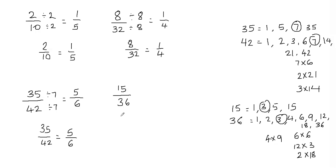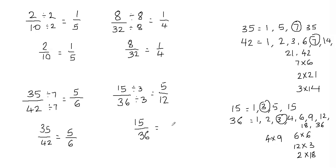So I can divide my fraction 15 over 36 by 3, since 3 is my GCF. 15 divided by 3 is 5, and 36 divided by 3 is 12. So I can reduce my fraction 15 over 36 to 5 twelfths. And that's going to be my final answer.